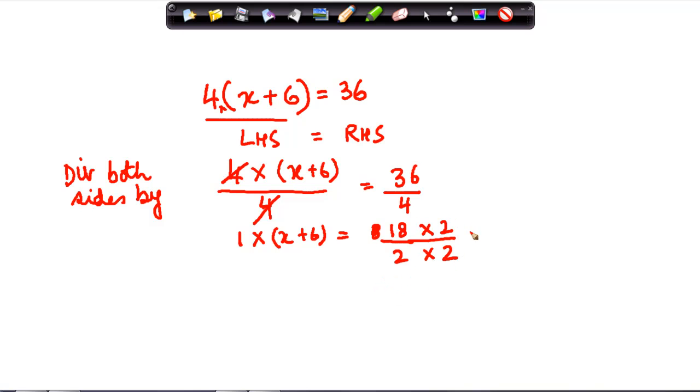Or further it can be written as: 18 can be written as 9 times 2 times 2 divided by 2 times 2. So these two cancel with each other, these two get cancelled with each other. What am I left with? I am left with 9. So what do I get here? I get x + 6 is equal to 9.